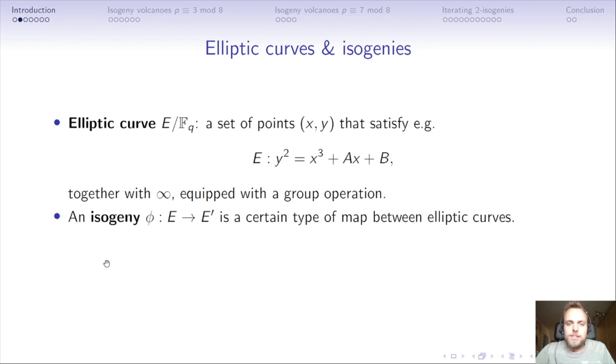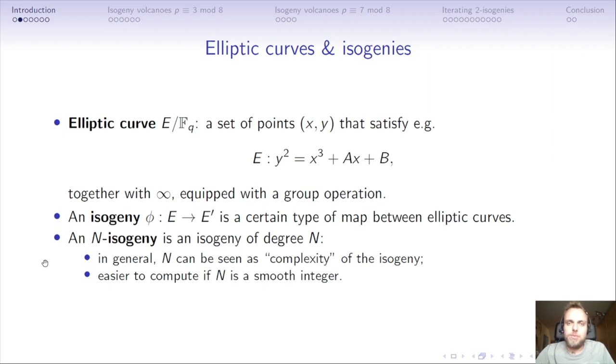I'm guessing most people know what an elliptic curve is. Typically it's given by some equation, say a Weierstrass equation E: y² = x³ + Ax + B. We add a point at infinity and have a group operation. An isogeny φ: E → E' is a certain type of map between elliptic curves. The important thing is that isogenies have a degree N, which determines the complexity of the isogeny. If N is a large prime, it's hard to compute, but if N is a large smooth integer, it's easier because we can decompose an N-isogeny. For example, a degree 6 isogeny decomposes as a degree 2 and degree 3 isogeny concatenated.